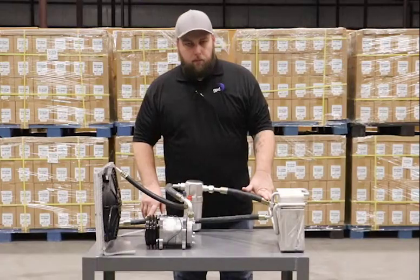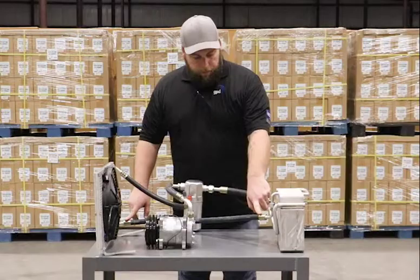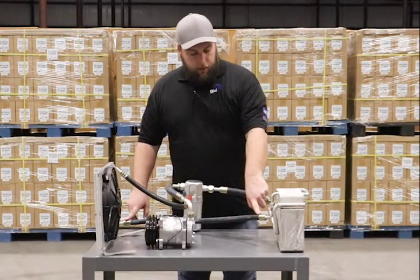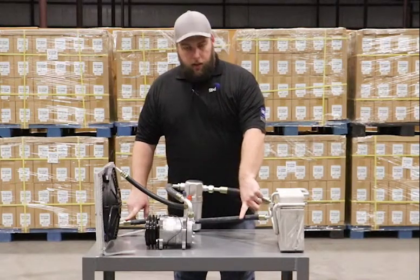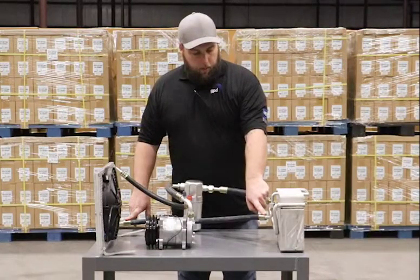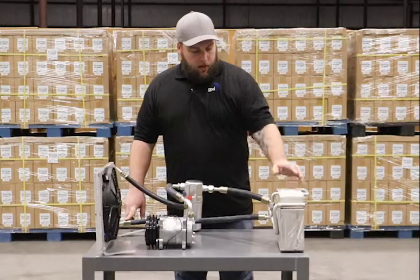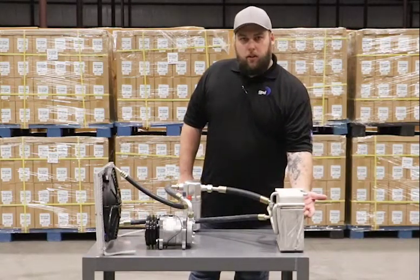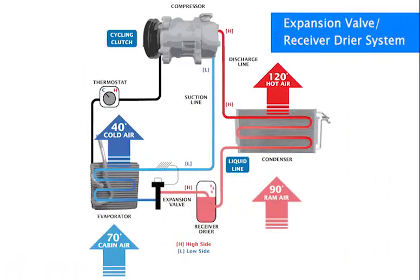On this type of system you have an orifice tube in this line — it could be anywhere in this line; this one happens to be right in here. What happens here is the refrigerant goes from a hot liquid to a cold liquid. That liquid then fills up this evaporator. You have cold refrigerant in the evaporator, and you have your blower motor blowing over the cold evaporator, which absorbs the heat out of the air.